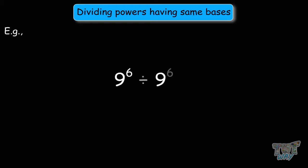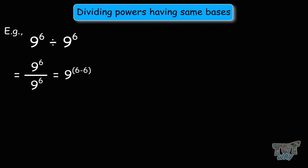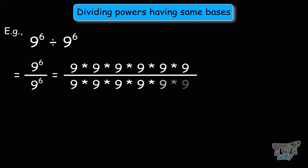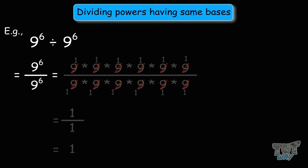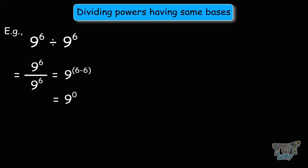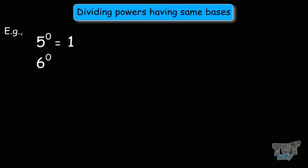Next: 9 to the power of 6 divided by 9 to the power of 6. Bases are the same, so subtract the exponents: 9 to the power of 6 minus 6 equals 9 to the power of 0, which equals 1, because anything to the power of 0 is 1. We can prove this practically: expanding 9 to the power of 6 on both top and bottom and crossing out all the nines, we're left with 1 over 1, which equals 1. Hence, anything raised to the power of 0 is 1. For example: 5, 6, 7, and 8 to the power of 0 all equal 1.